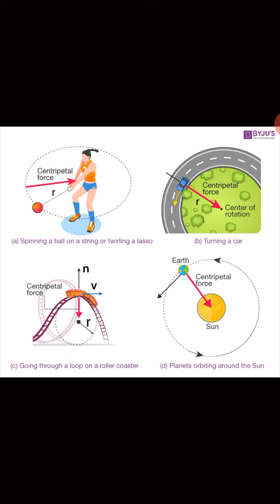The Earth and other planets orbit — meaning they complete one full circle revolving around the Sun in a fixed orbit. The force which keeps the planets in orbit around the Sun is the centripetal force directed towards the Sun. In image D, the red arrow indicates the centripetal force acting between the planets and the Sun towards the center of the Sun. This centripetal force holds the Earth and allows it to move in a circular manner around the Sun, and the same applies to all other planets.